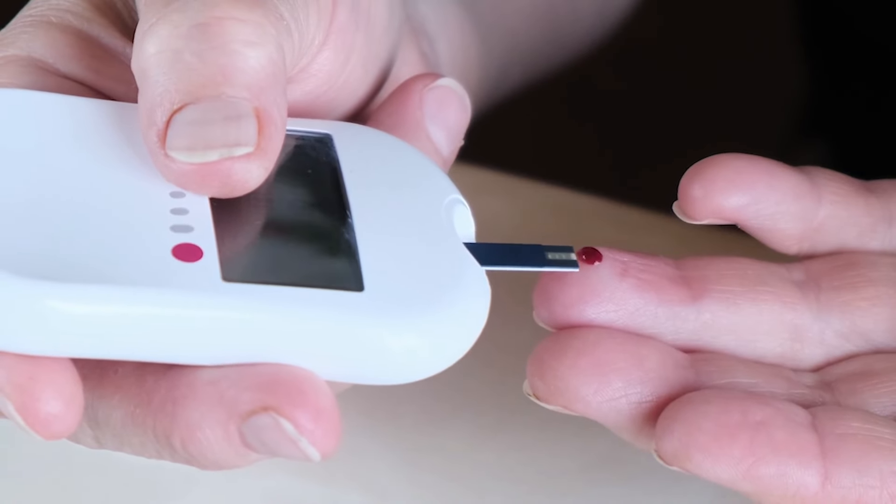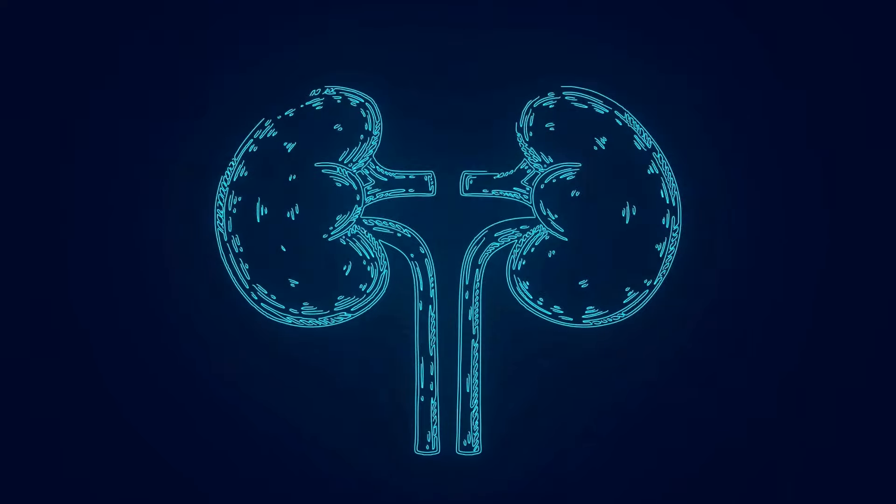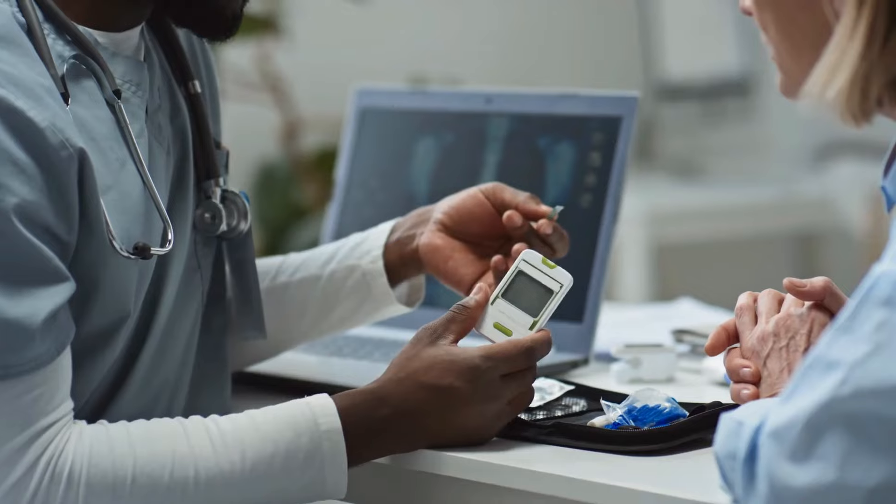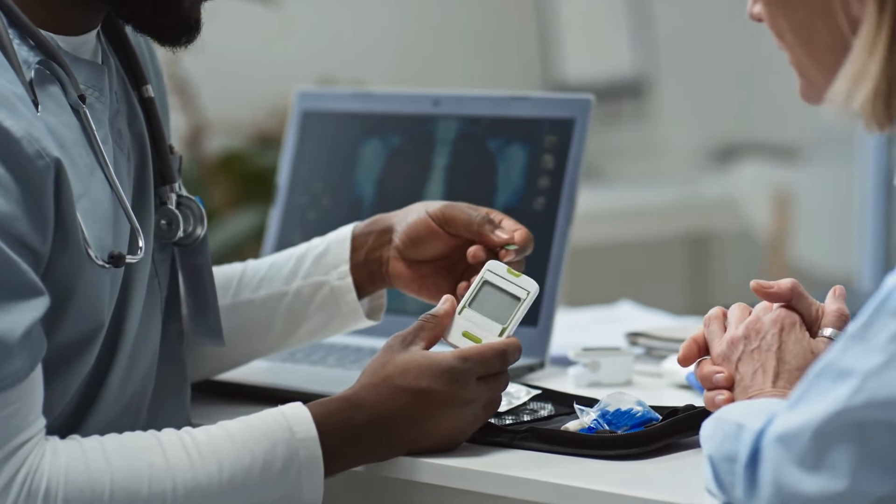High blood sugar can put a strain on your kidneys. If you have diabetes or pre-diabetes, work closely with your doctor to manage your blood sugar levels.